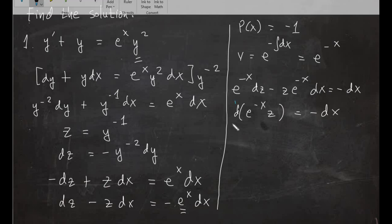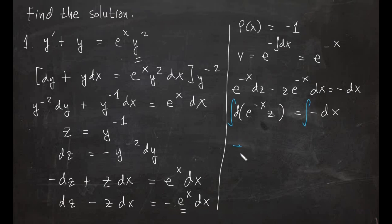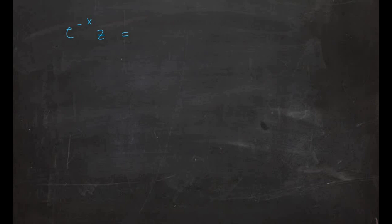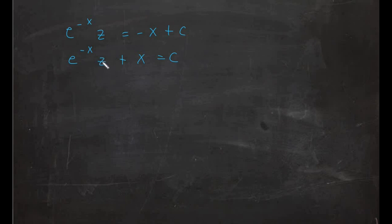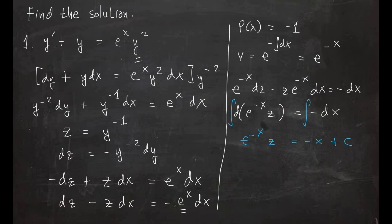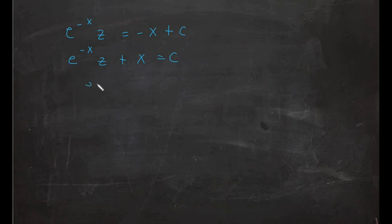Integrating both sides gives e raised to negative x times z equals negative x plus c. Rearranging, e raised to negative x times z plus x equals c. Returning to the original variable using z equals y raised to negative 1, our final answer is e raised to negative x over y plus x equals c.